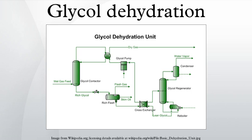Depending on composition, these hydrates can form at relatively high temperatures, plugging equipment and piping. Glycol dehydration units depress the hydrate formation point of the gas through water removal.